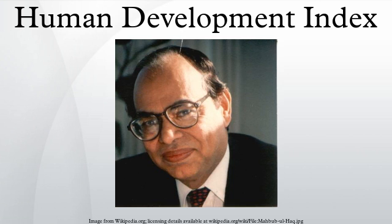An HDI below 0.5 is considered to represent low development. All 22 countries in that category are located in Africa. The highest-scoring sub-Saharan countries, Gabon and South Africa, are ranked 119th and 121st respectively. Nine countries departed from this category and joined the medium development group. An HDI of 0.8 or more is considered to represent high development. This includes all developed countries, such as those in North America, Western Europe, Oceania, and Eastern Asia, as well as some developing countries in Eastern Europe, Central and South America, Southeast Asia, the Caribbean, and the oil-rich Arabian Peninsula.